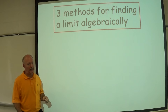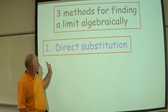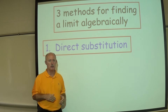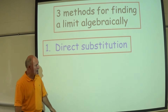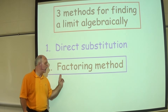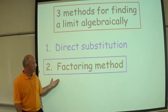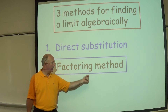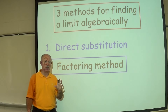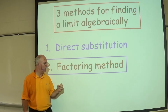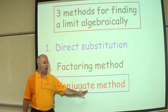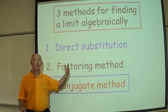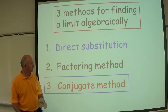There are three methods for finding a limit algebraically. The first is direct substitution — you always try this one first because it's the easiest. If X is approaching some number, you take that number and plug it in for X in your function. If direct substitution doesn't work, you try to factor the problem, because there's likely a hole in the graph that we can factor out. And third is what's called the conjugate method, which involves problems with radicals where you rationalize the numerator.